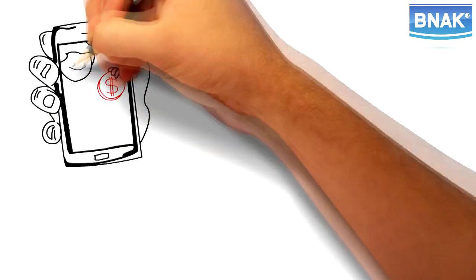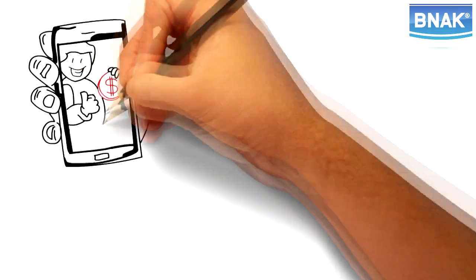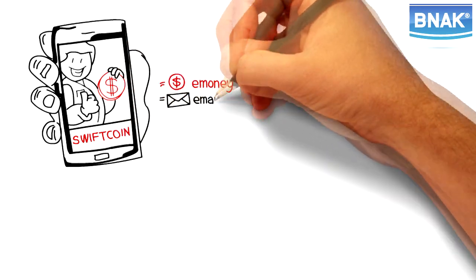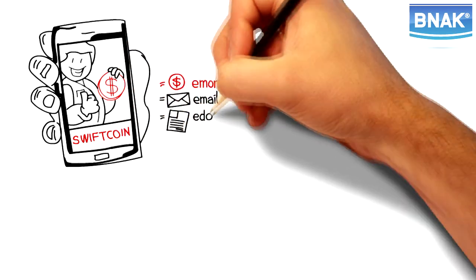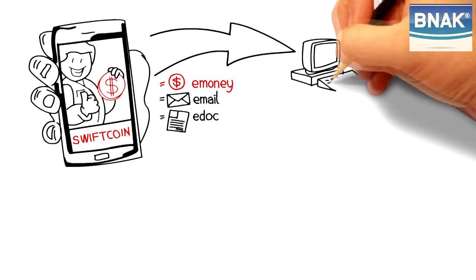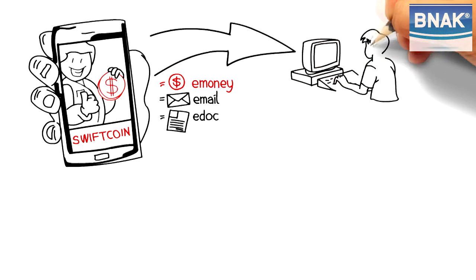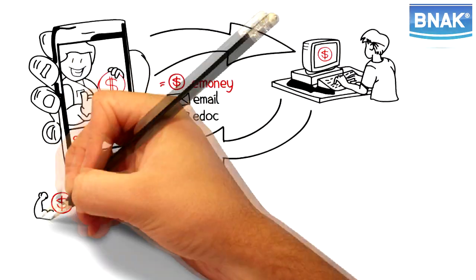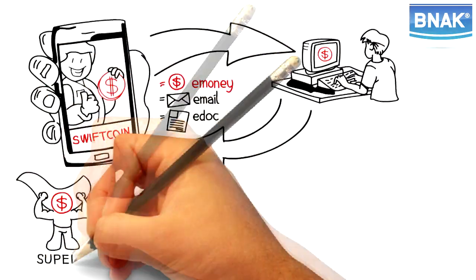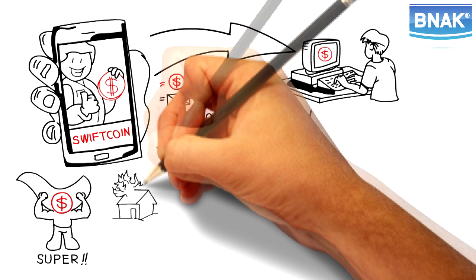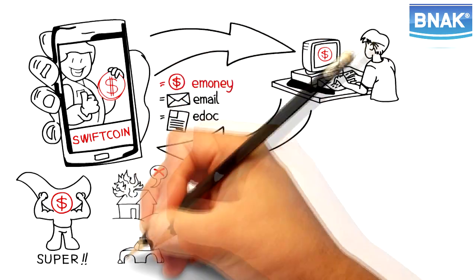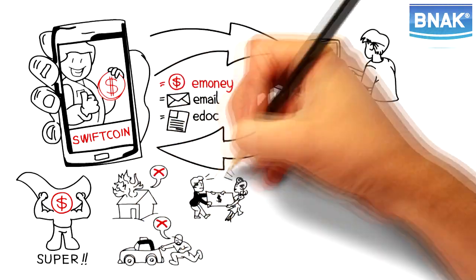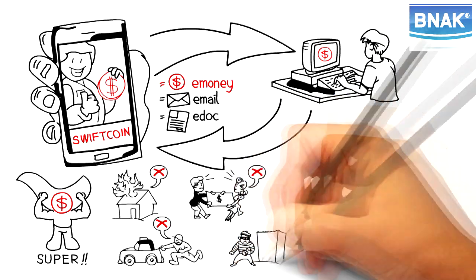What is SwiftCoin and why is it safer than cash? SwiftCoin is electronic money that inhabits your computer just as email and word documents do. You can send SwiftCoin to anybody just as quickly and easily as you would send email and word document attachments. SwiftCoin is indestructible and stealthy. It cannot be burned in a house fire, left in a taxi, taken out of your hands, or removed from your bank account.